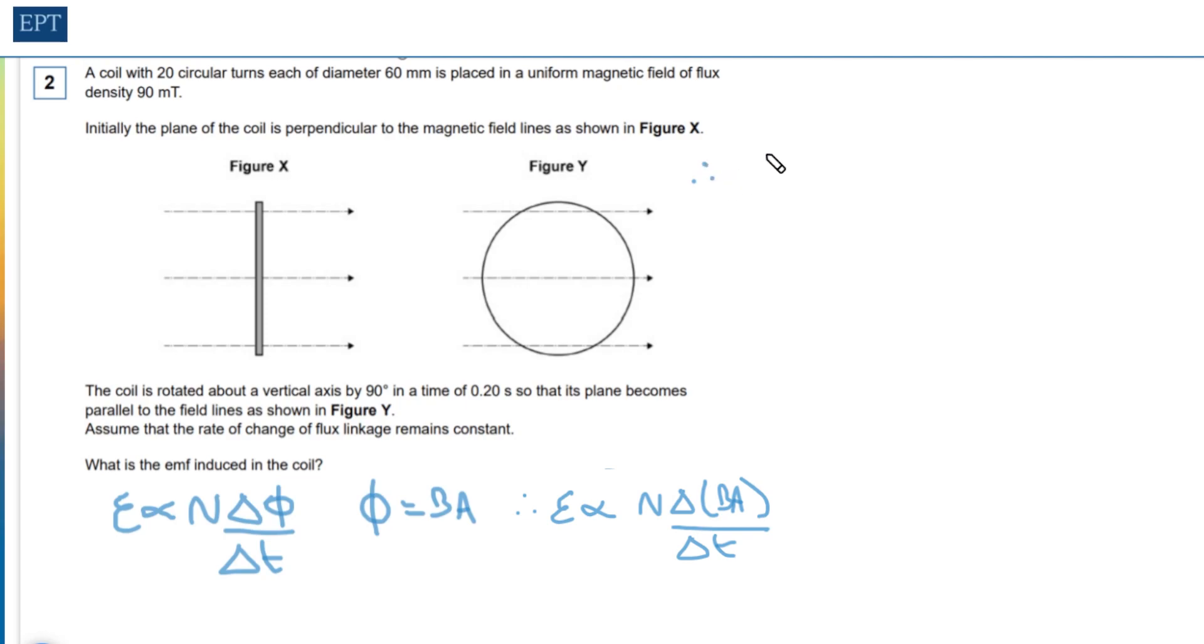So it's just a question of plugging the numbers into this formula. The EMF is proportional to 20, because that's the number of turns, times 90 milliteslas, the strength of the magnetic field, times the area of the coil. Of course, we've been given the diameter, so it's going to be 30 millimeters squared times pi.